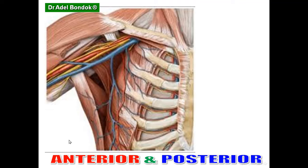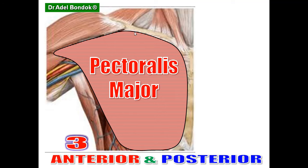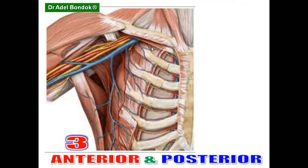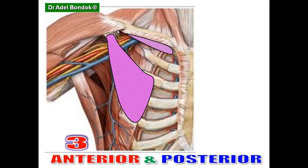The anterior wall is formed of three muscles. The anterior layer is the pectoralis major, and the deep muscles are the subclavius and pectoralis minor — arising from the third, fourth, and fifth ribs — with the clavipectoral fascia in between. So the anterior wall: three muscles and clavipectoral fascia.